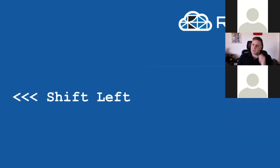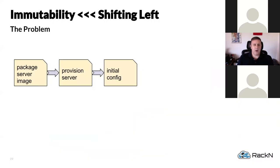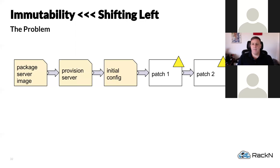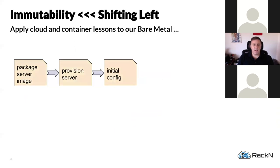Going back to the shift-left discussion — in a typical environment, you create and package a server image, provision the server, set up initial configuration, and then patch it repeatedly, ending up with a snowflake. The madness continues with hundreds of patch iterations, which creates snowflakes because you eventually get drift between large clusters — some machines don't get updated in line with a patch process, something goes wrong, and you end up with snowflakes at large scale.